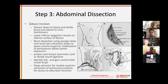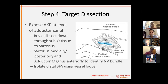Use your Omni-retractor with a deep wide retractor for medial superior traction to get peritoneal components out of the way, and a more shallow retractor laterally — being careful not to pull too hard on the nerves running across the lateral pelvic wall. Step four is target dissection. Expose the above-knee popliteal at the level of the adductor canal. Bovie dissect to the sartorius, retract that medially and posteriorly, retract the adductor magnus anteriorly to identify the neurovascular bundle, and isolate it with vessel loops in a standard above-knee popliteal exposure.